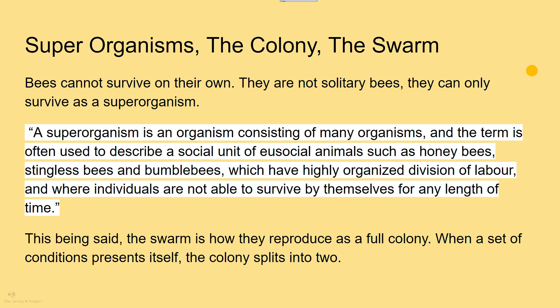Honeybees are superorganisms — they cannot survive alone. A superorganism is an organism consisting of many organisms. Worker bees can't exist on their own; they need a queen and drones. They have a highly organized division of labor and must exist together as a colony. Other bees like mason bees are solitary, but honeybees exist as a superorganism colony. It's interesting to compare this to human society — we also exist as a kind of superorganism, relying on each other.